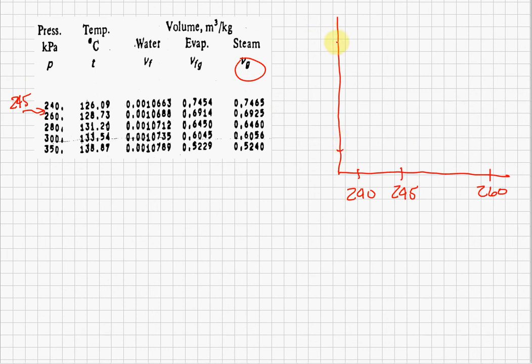And I now have two different volumes. I have 0.7465 meters cubed per kilogram, and I have 0.6925. The only difference is that the 0.6925 is now at 260 kilopascals, and the 0.7465 is at 240 kilopascals. And notice that my line now runs the other way. What does that mean? It has a negative slope. There's a negative relationship between those two. But don't let that freak you out because the math will help us through.